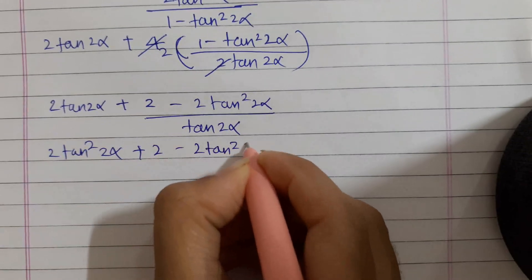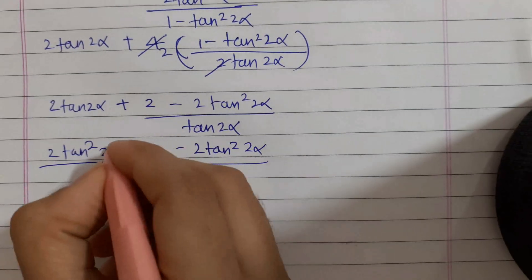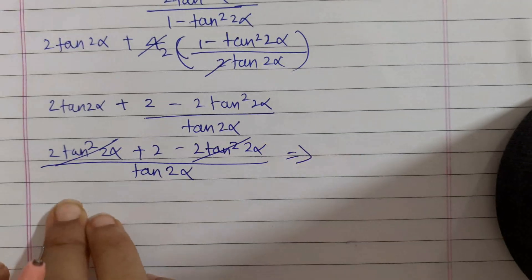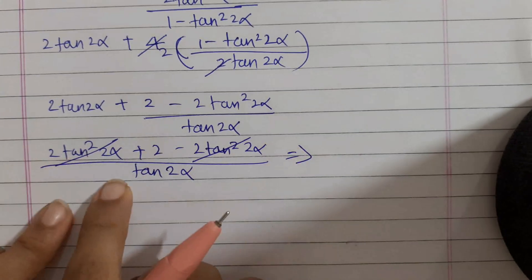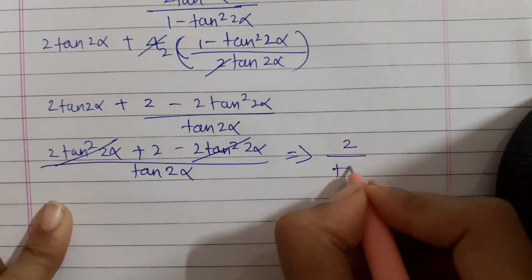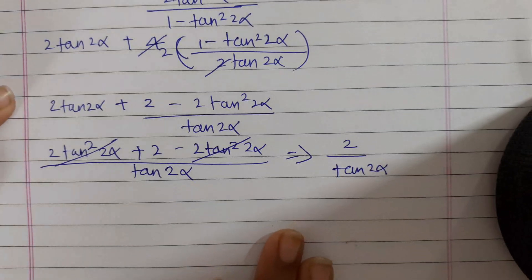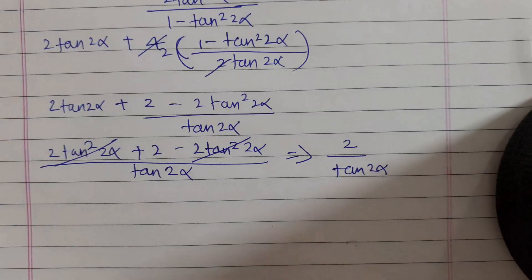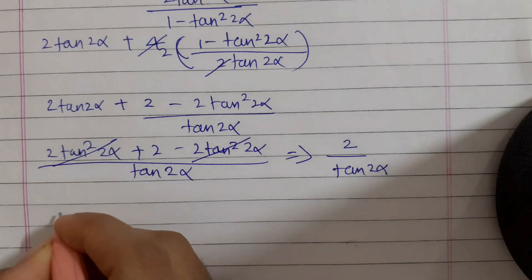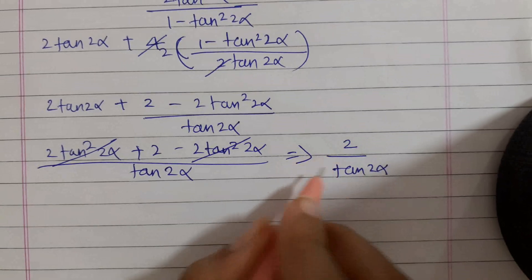The terms cancel, and this is the simplification of the last three terms, which gives 2/tan 2α. Basically in this question we solve from the right-hand side, first solving the last term, and now we have the result of the sum of the last three terms.